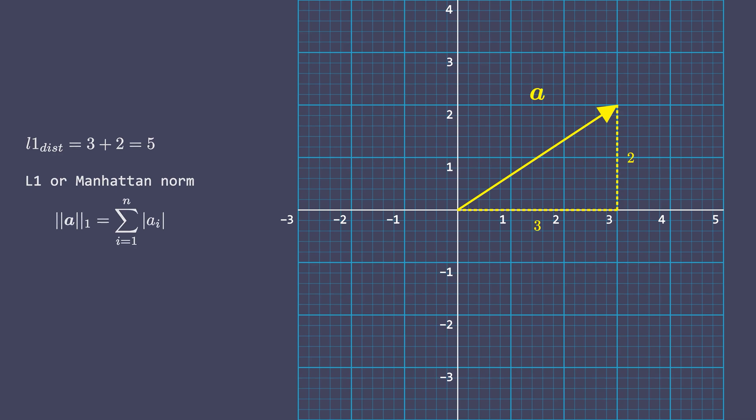Another way would be to calculate the length of the line segment between the point at origin and the point at the tip of the vector, the orange line in our case, which can be calculated as under root 3 square plus 2 square. This distance is called the L2 distance or the Euclidean distance.